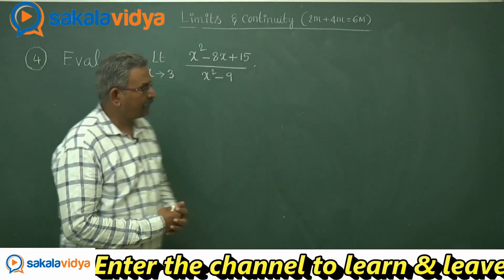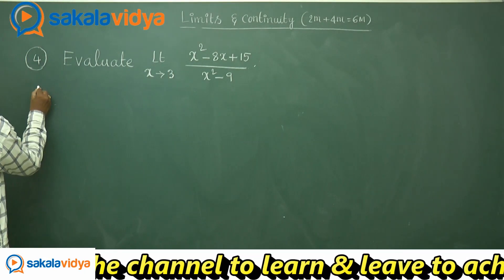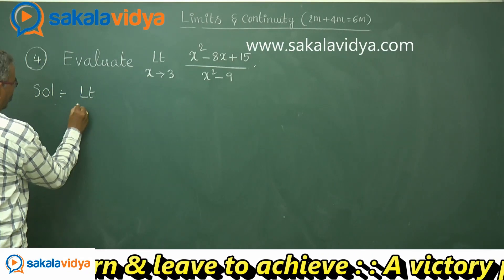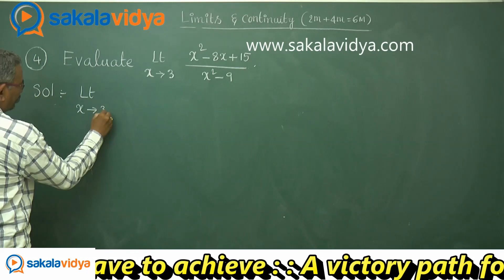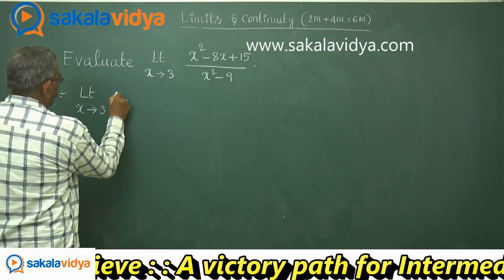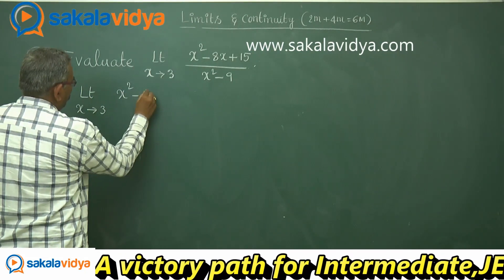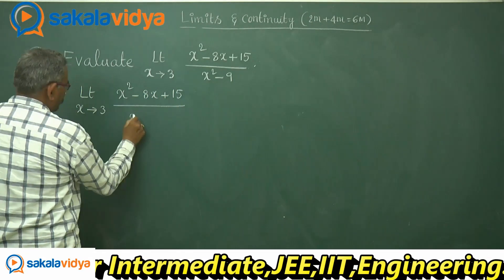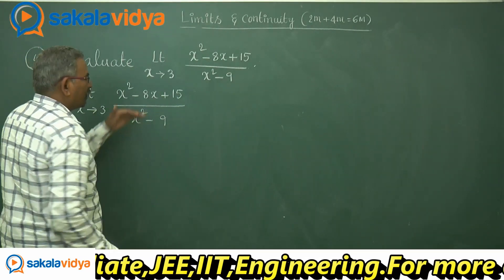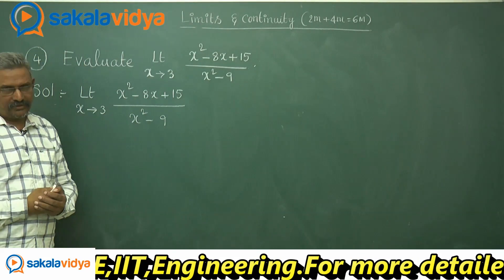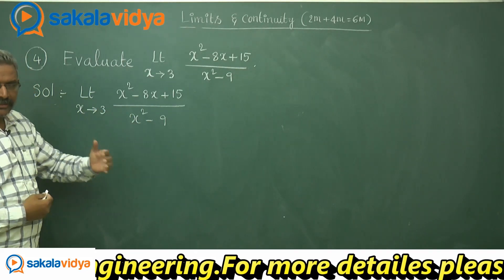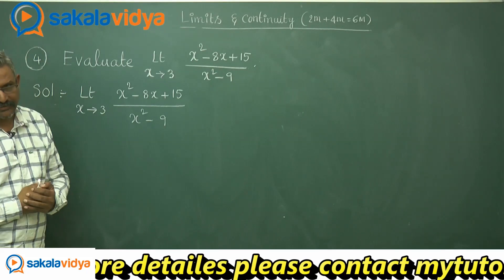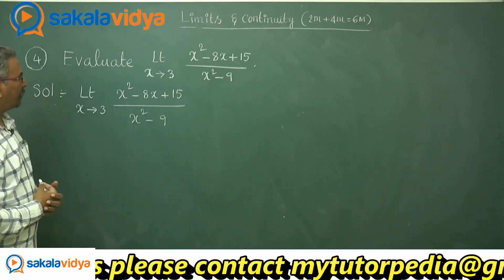Let us solve one more question. Solution: limit x tends to 3 of [x² - 8x + 15] upon [x² - 9]. We need to find the factors of the numerator as well as the denominator, then cancel the common factors. This is the strategy — a very simple strategy.